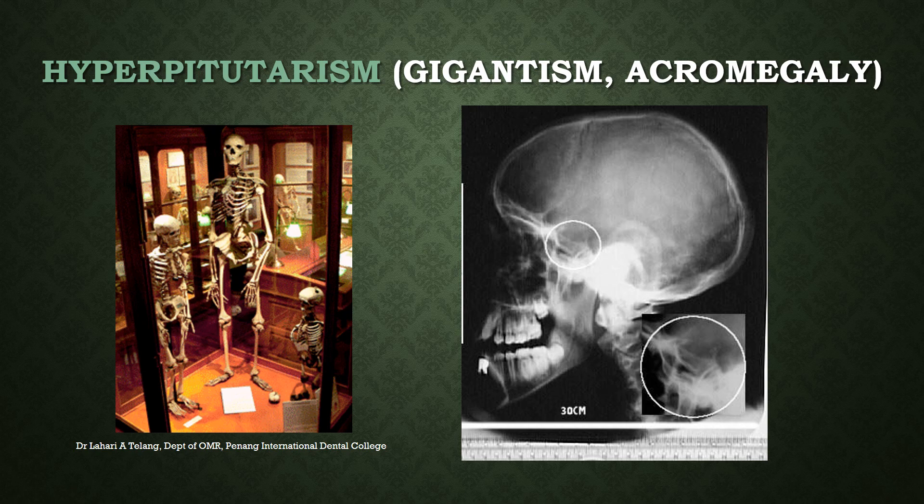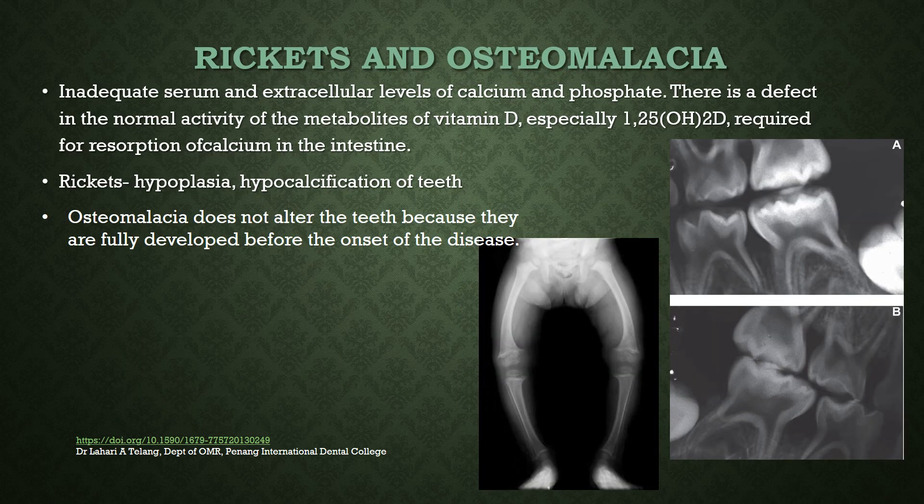In hyperpituitarism (gigantism or acromegaly), the size of the skeleton itself is very large and the pituitary sella turcica region also appears enlarged on imaging. In rickets and osteomalacia, inadequate serum and extracellular levels of calcium and phosphate are the hallmark. There is a defect in the normal activity of metabolites of vitamin D, especially 1,25-cholecalciferol, required for calcium resorption in the intestine. In rickets, there is hypoplasia and hypocalcification of teeth — the teeth look like shells — whereas in osteomalacia, which occurs in adults, the fully developed teeth are not altered. Bending of bones is also visible in a child with rickets.